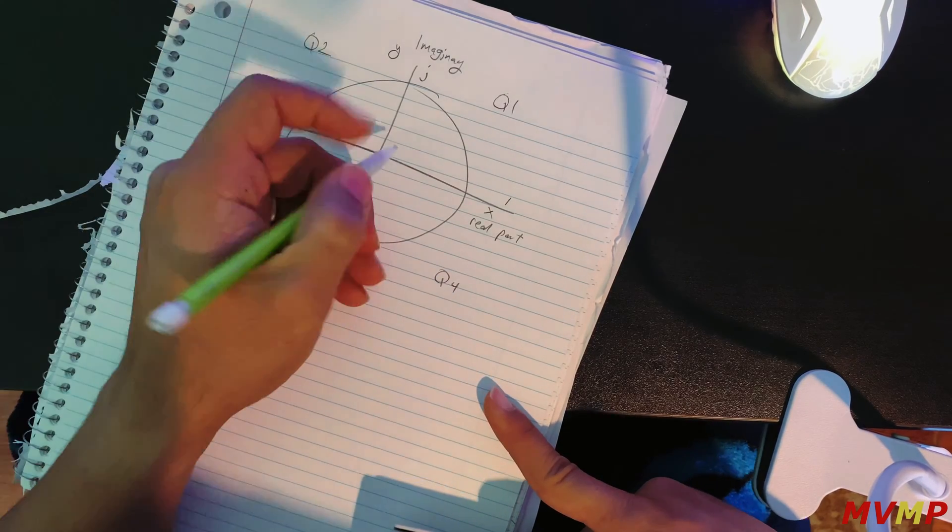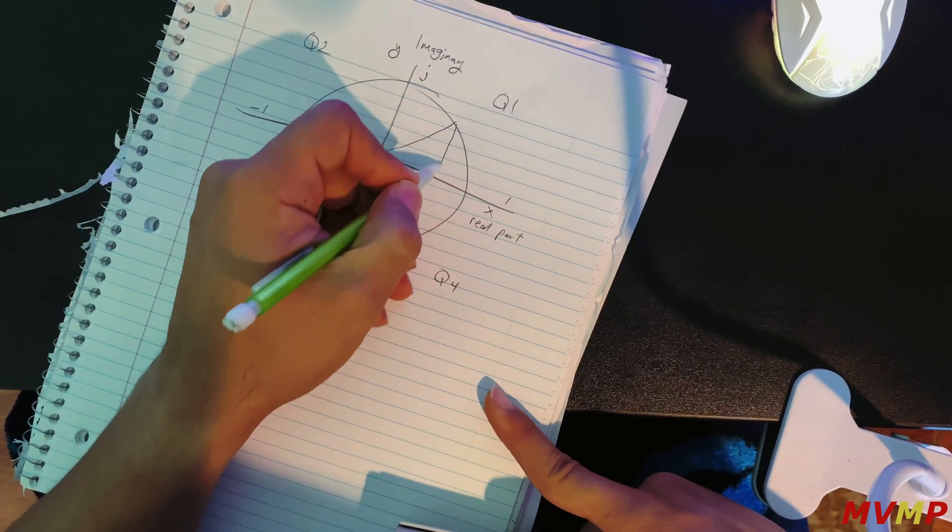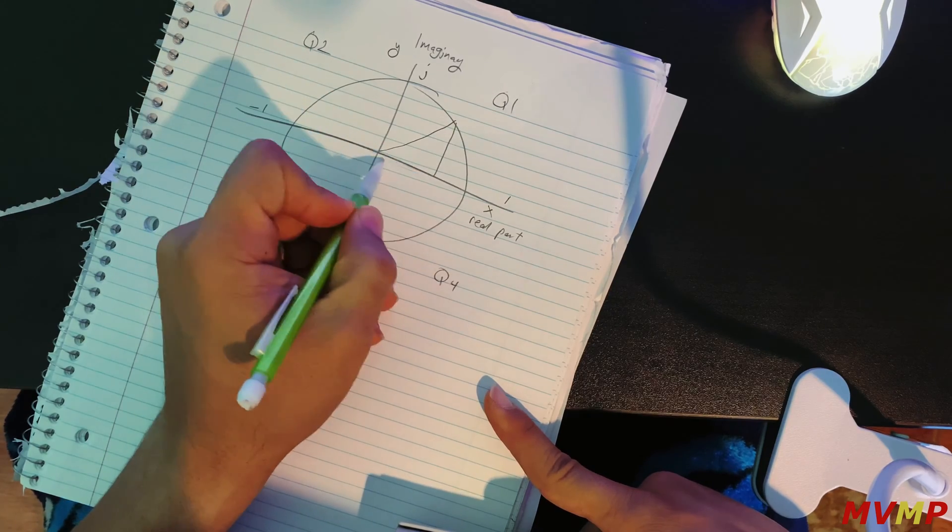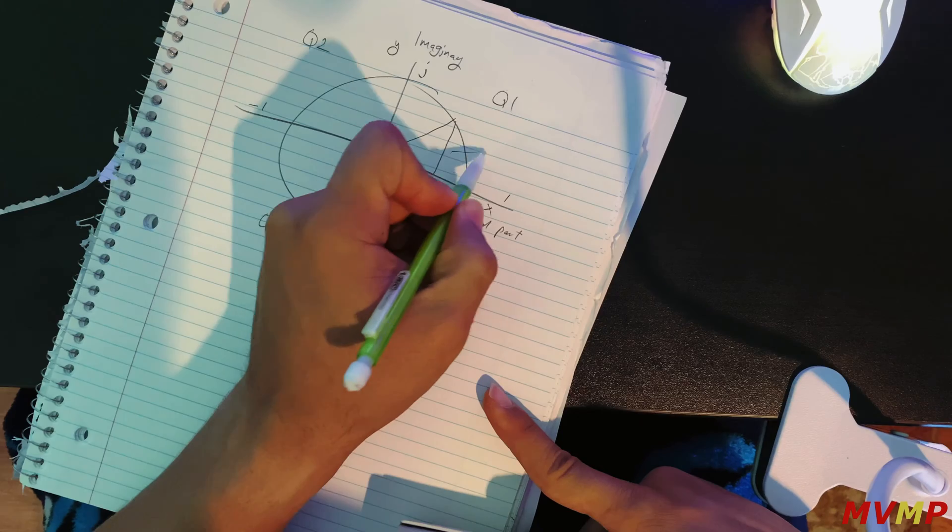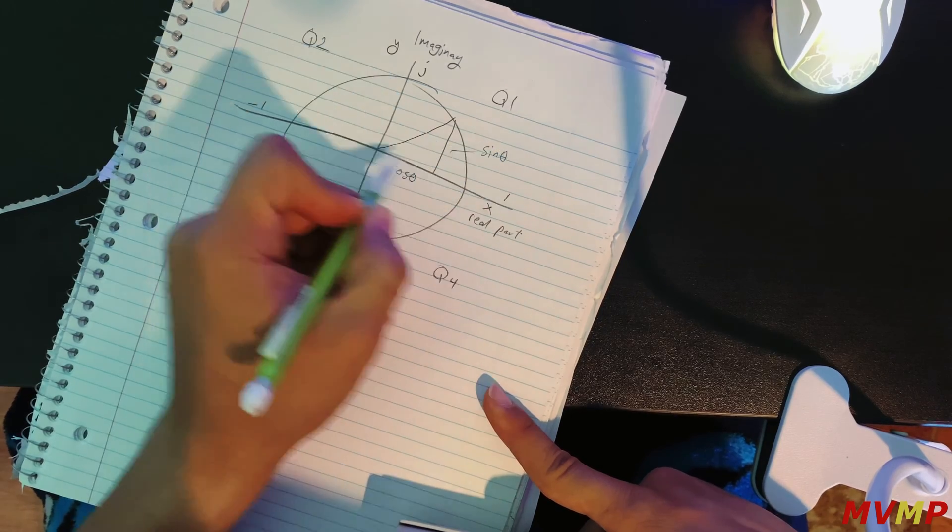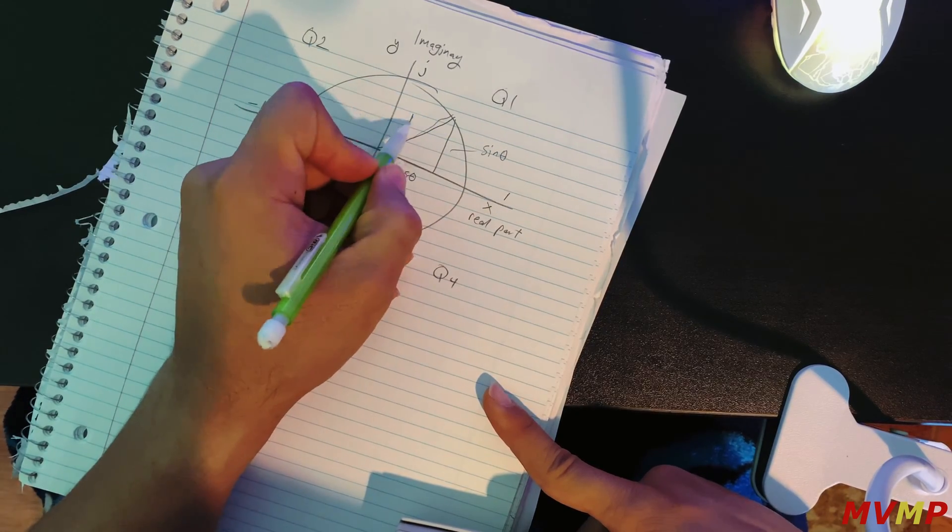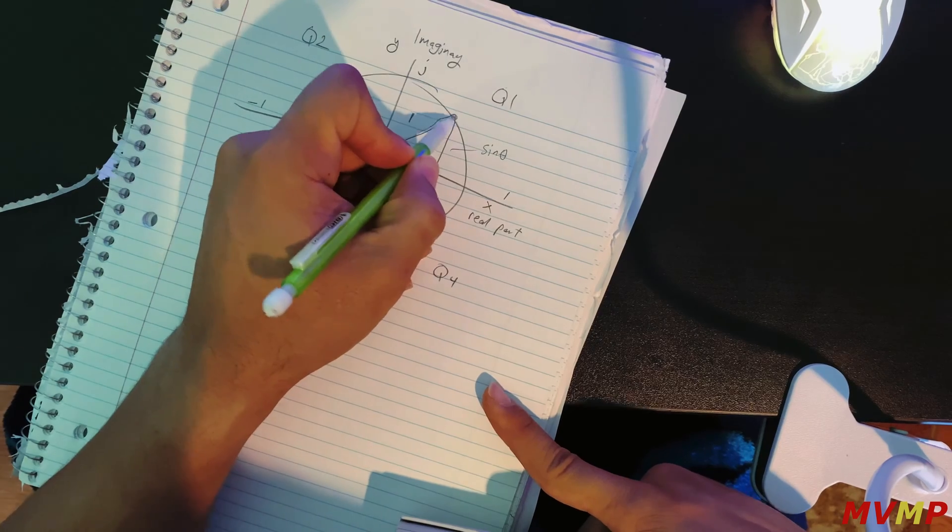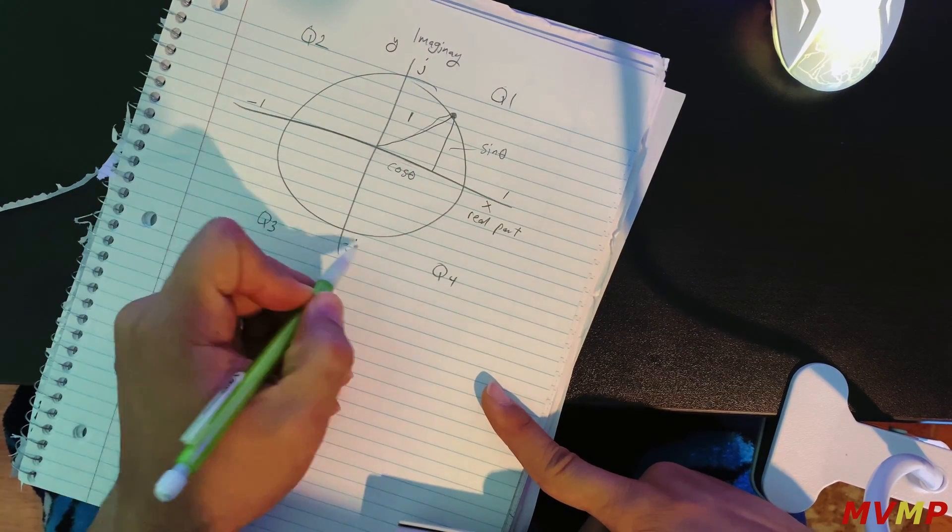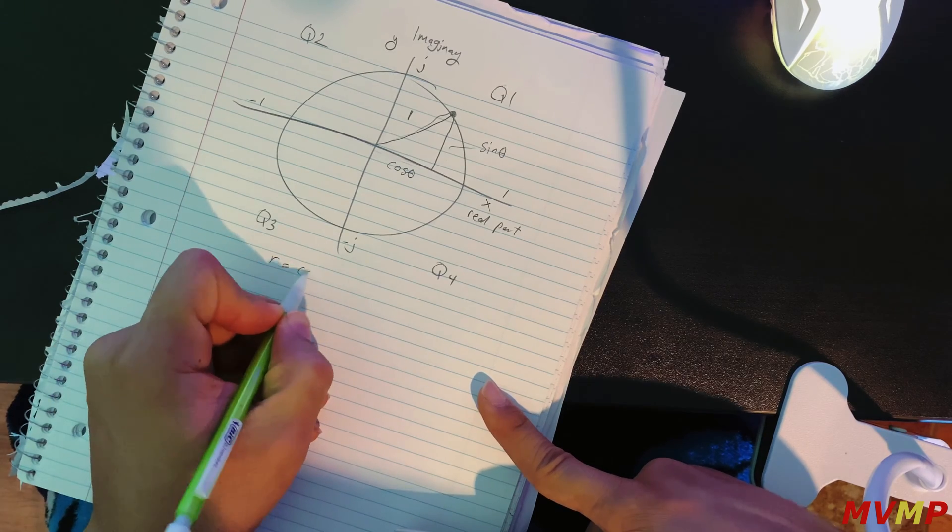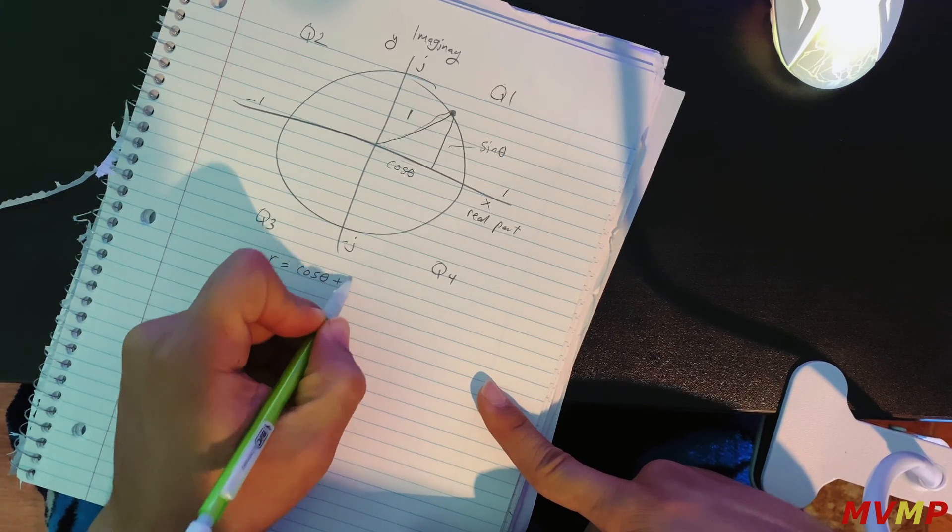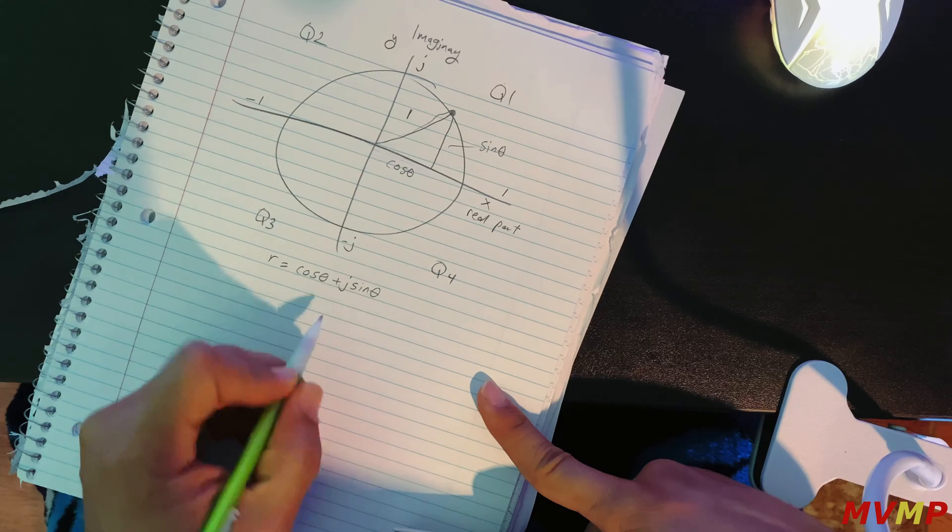And if you were to draw a triangle here, your x-axis, your real part, is cosine theta, your y is sine theta, and your hypotenuse is one so this point here is one all around. Now the equation for that is R equals cosine theta plus j sine theta.